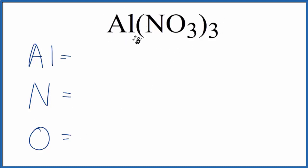For aluminum, there's nothing written after it, there's no subscript, so we assume that to be one. So we have one atom of aluminum here. For nitrogen, also nothing written, so one nitrogen. But this three here, the subscript, applies to everything in the parentheses. So three times the one, that'll give us three nitrogen atoms.